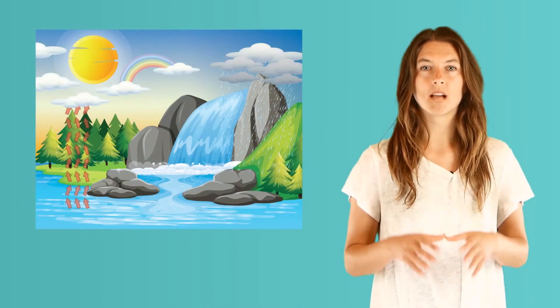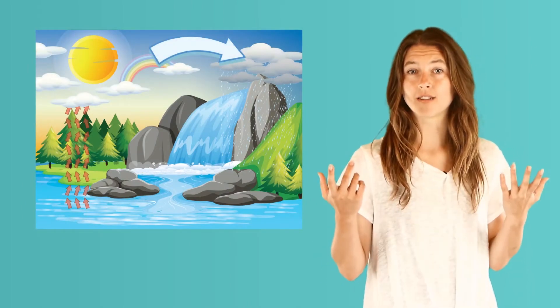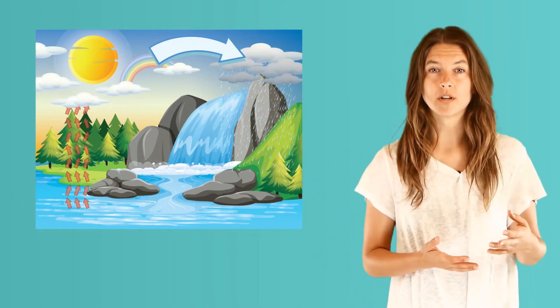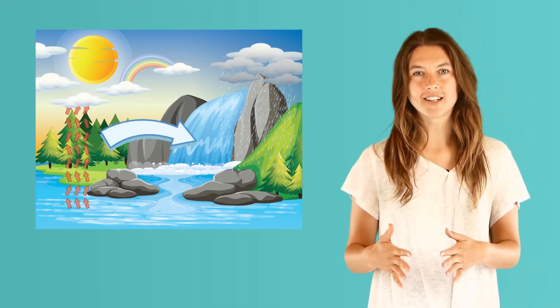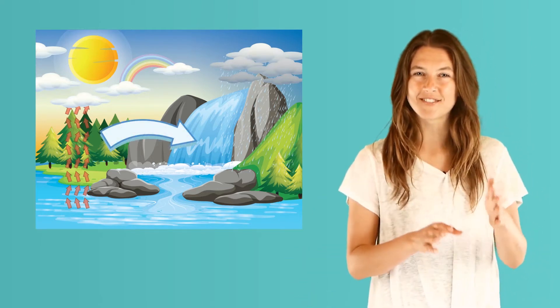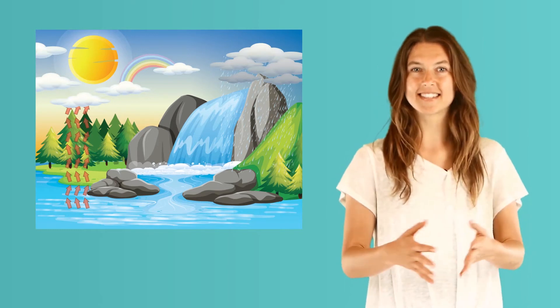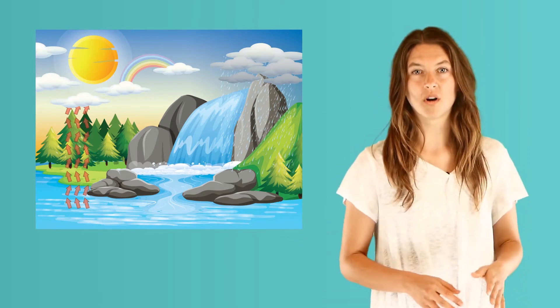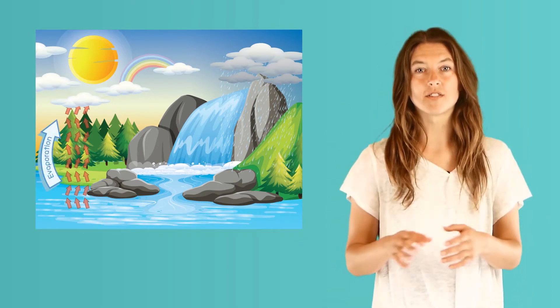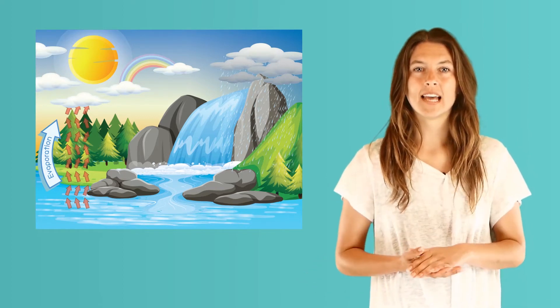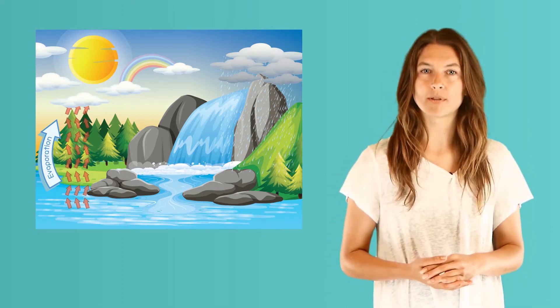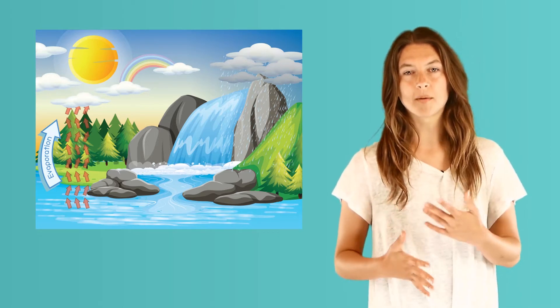To understand the weather, we need to learn about Earth's water cycle. A lot of people think rain comes from clouds, and this is true, but did you know that rain starts from bodies of water like oceans, lakes, rivers, and streams? In the water cycle, water evaporates or turns from liquid into vapor. It does this because of a change in temperature or because of a change in air pressure.